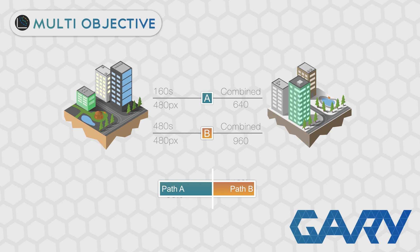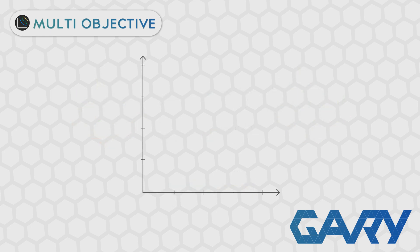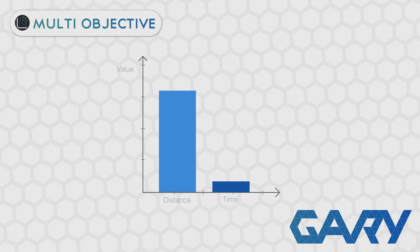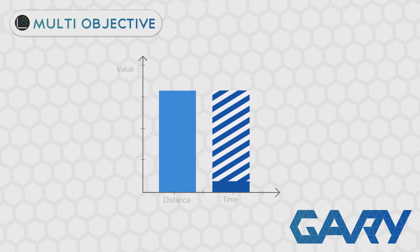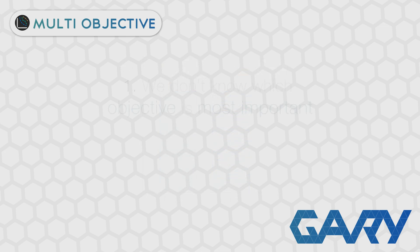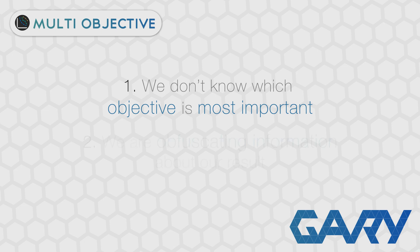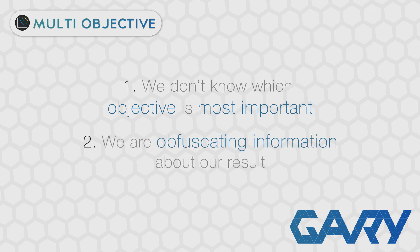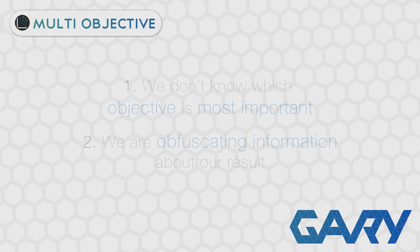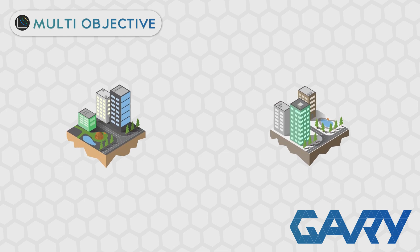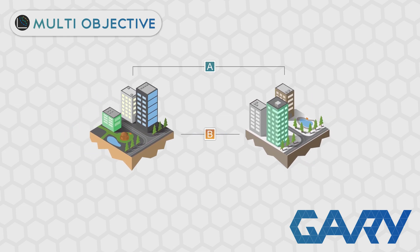Now that we've done that, let's check their likelihood of being selected. It looks like we're getting somewhere — 60% for path A and 40% for path B, so path A is 1.5 times as likely to get selected. But is that even correct? What are we implying when we multiply time to put it on the same scale as distance? We're saying we care equally about distance traveled and time taken. Firstly, this isn't necessarily the case — we don't know which is more important. Secondly, we are voluntarily ignoring some important information about our results.